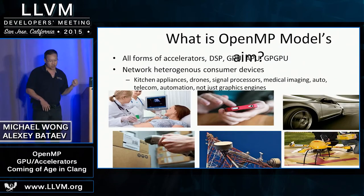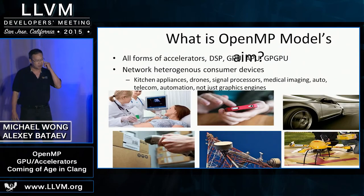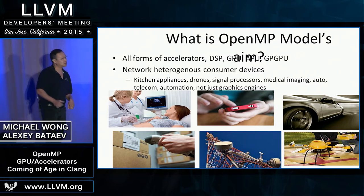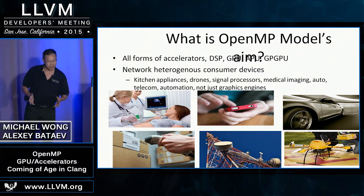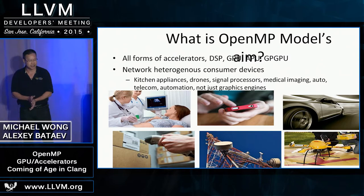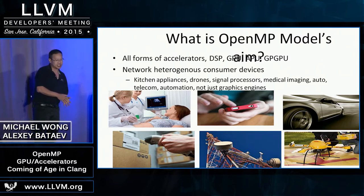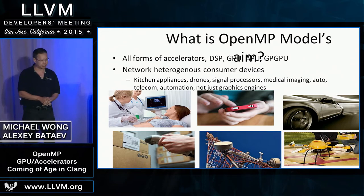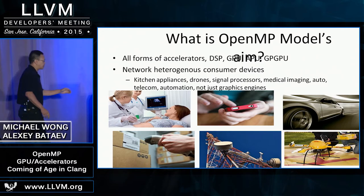OpenMP's memory model aims to support all forms of accelerators — not just one company's devices. It targets DSPs, GPUs, and GPGPUs. You'll see it in kitchen appliances, drones, signal processors, medical imaging devices, and not just high-performance computing.